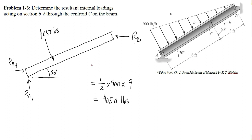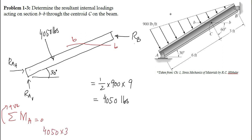Now, as we have to determine the resultant internal loadings at section BB, we have to cut the member at section BB. Taking the upper portion, the value of R_B can be calculated by applying the third condition of equilibrium at point A — that is, the summation of all moments at point A equals zero. Taking clockwise moments as positive, the moment due to 4050 pounds is clockwise with a magnitude of 4050 multiplied by 3. The moment due to R_B at point A is anti-clockwise and therefore negative, with a moment arm of 4.5.